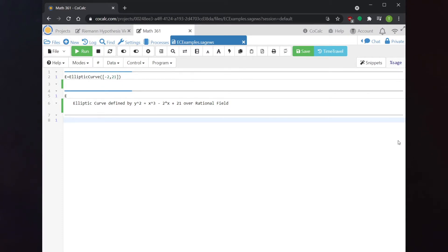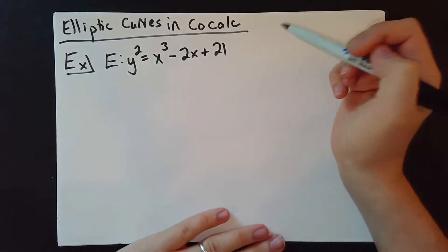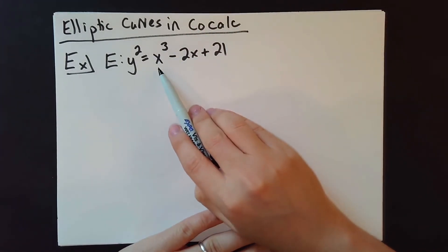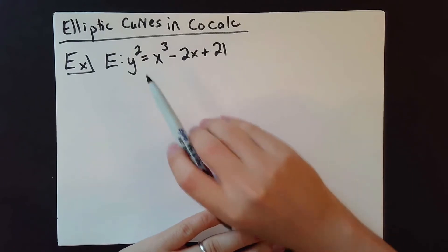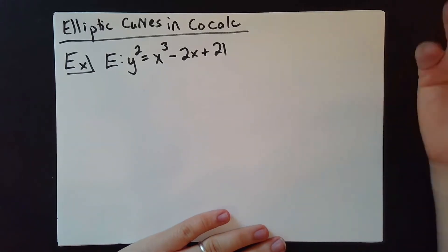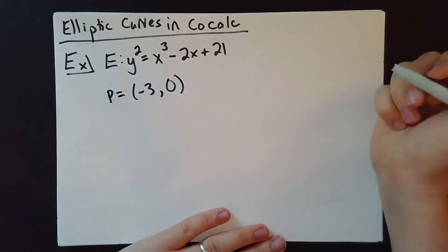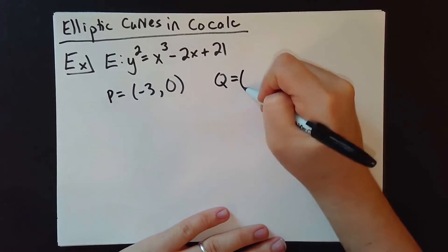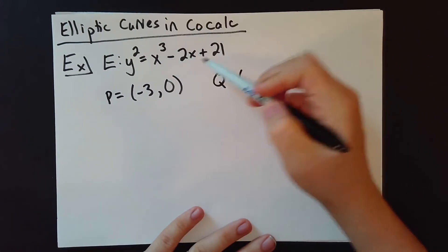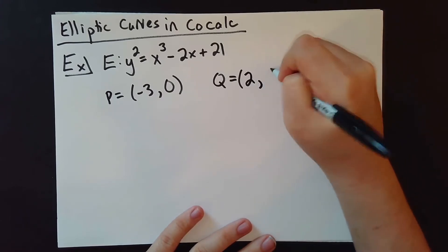Now, what kinds of things are we going to want to do with this elliptic curve? We might want to add or multiply points. One point you might notice is that if x = -3, the right-hand side becomes -27 + 6 + 21 = 0. So one point is (-3, 0). Another point: if x = 2, we get 8 - 4 + 21 = 25, so we can take x = 2 and y = 5.